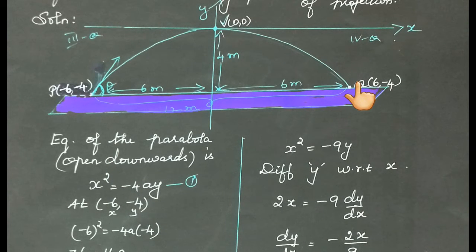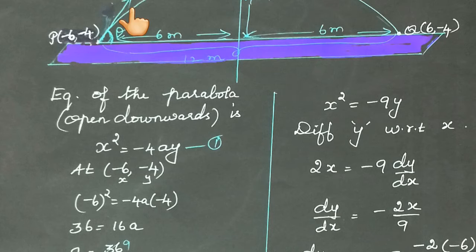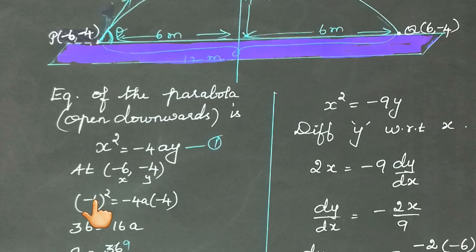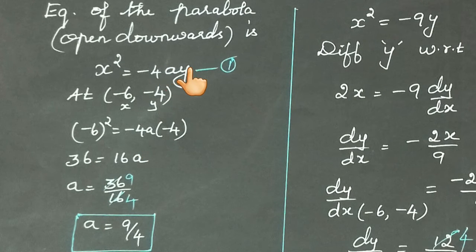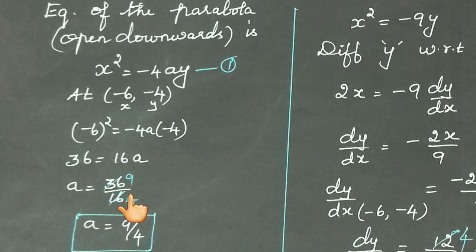This parabola opens downwards. The equation of a downward-opening parabola is x² = −4ay. Name this equation 1. The point P is (−6, −4). Substituting x = −6 and y = −4: (−6)² = −4a(−4), which gives 36 = 16a. Therefore, a = 36/16 = 9/4.